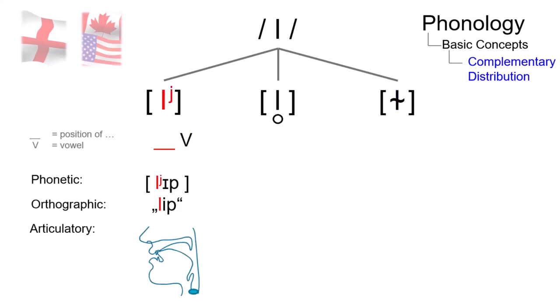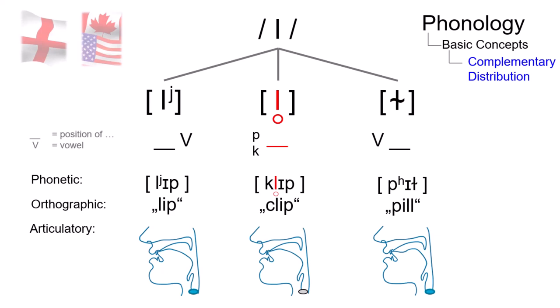The slightly palatalized variant stands before vowels, as in lip. The velarized L occurs after vowels, as in pill, and the devoiced variant can be found after bilabial or velar plosives, as in clip.